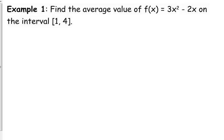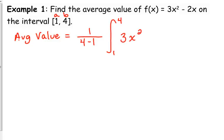Okay, so let's see this in practice. We've got a function, 3x squared minus 2x. We want to find the average value of this function on the interval from 1 to 4. So, to do that, the average value is going to be 1 over b minus a, so 4 minus 1, times the integral from a to b, 1 to 4, of our function. So, 3x squared minus 2x, don't forget the dx.